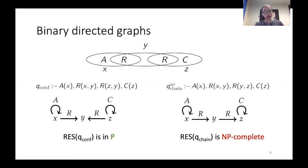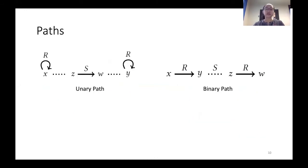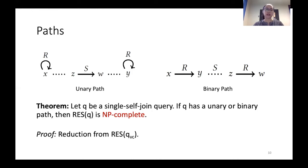So already this new way of representing queries is informative. One of the first structures we were able to define, once we started representing queries as directed graphs, is the notion of paths. We say that a query has a path if there exists a path between two R atoms in the directed graph representation of that query. We are able to show that the resilience of queries that contain paths is NP-complete, and all of the reductions were from Q_VC — the resilience of Q_VC. You can think of paths as a generalization of the structure seen in that query Q_VC.